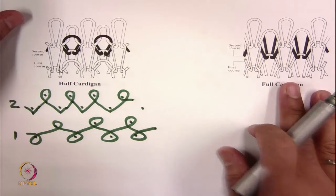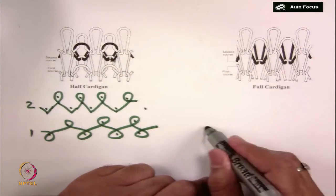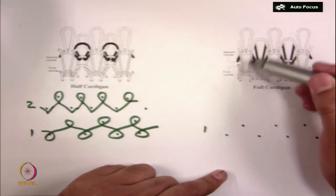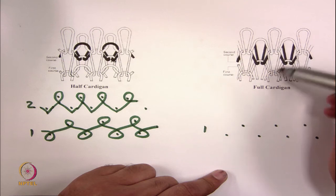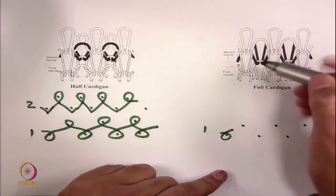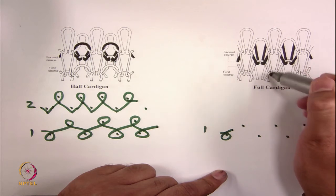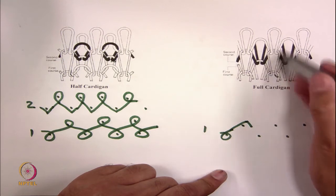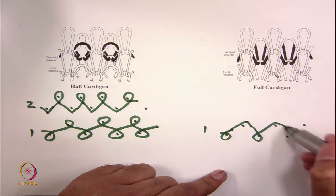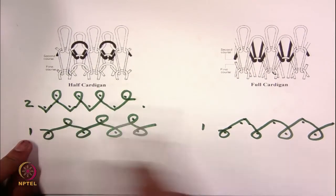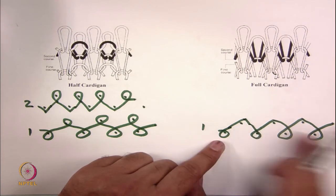In full cardigan, if you carefully see: in the first course, the technical front is making loop, then tuck, then loop, then tuck, then loop, tuck. The front bed is making loop while the back bed needles are making tuck. Then if you go for the third loop in the course, this is making technical front, then tuck, tuck, technical front, tuck, technical front. In half cardigan, both are loops in the first course, but in full cardigan, one bed is making loop while the other is making tuck.